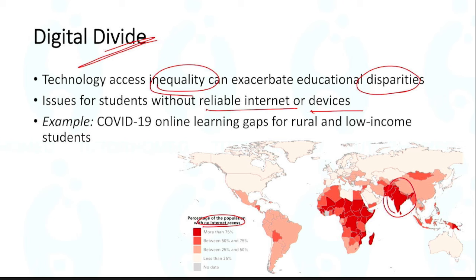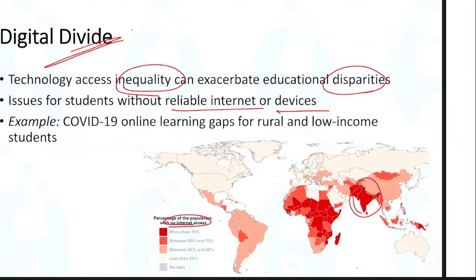For example, during COVID-19, the government passed certain laws and benefits for people in rural areas to get access to education. But still, there are people who do not have access to devices or internet. This becomes a major challenge in technology adoption.